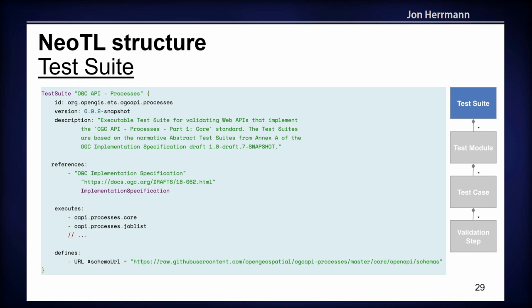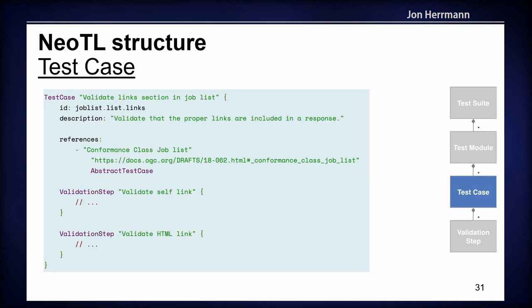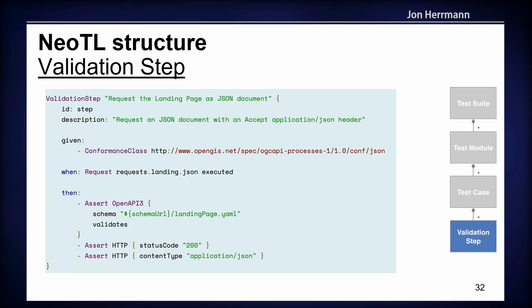At the top there is metadata for the test suite. Then there is an execute section where other test modules are referenced, and a defined section for reusing variables across all downstream levels. The test module looks quite similar to the test suite. On the next level there are test cases, and test cases have validation steps. The validation steps are structured with the well-known given-when-then pattern: the given part describes the precondition, the when part is the action executed, and in the then part the assertion is executed on the result received from the action.